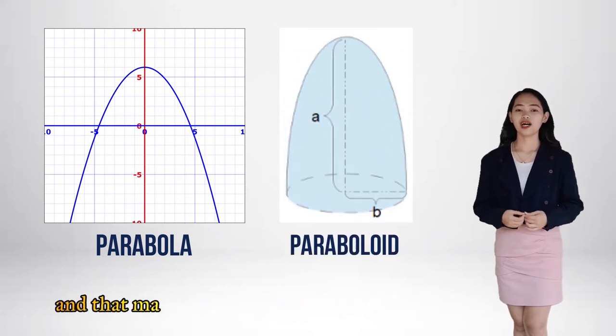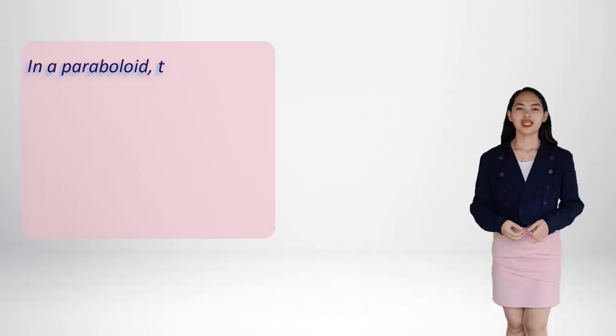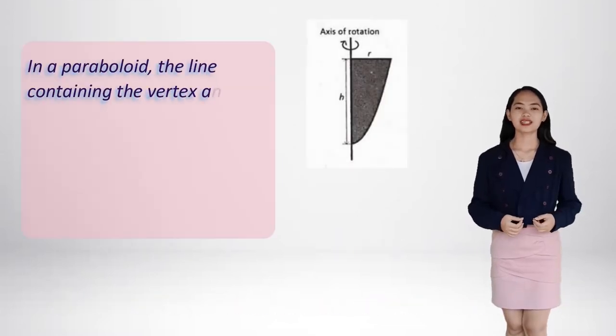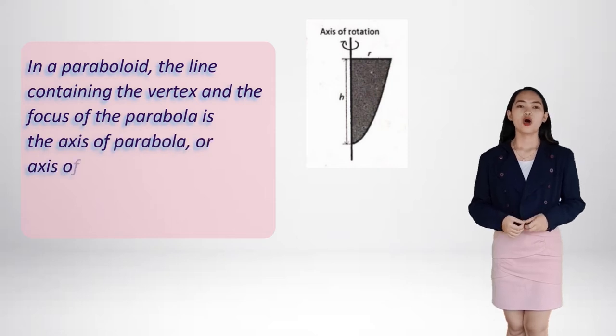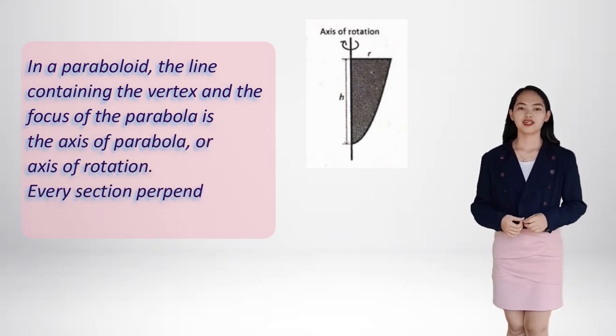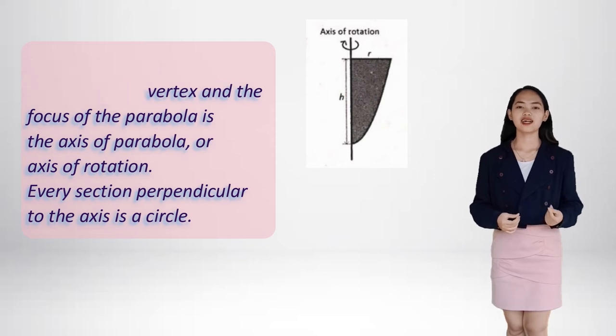In the paraboloid, the line containing the vertex and the focus of the parabola is the axis of parabola or axis of rotation. Every section perpendicular to the axis is a circle.